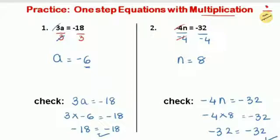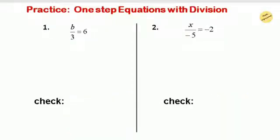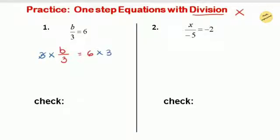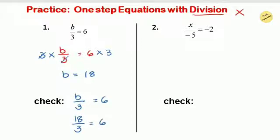We use the division property for multiplication equations. The next type is division equations, where the inverse operation is multiplication. First question: b over 3 equals 6. We multiply both sides by 3; on the left, 3 divided by 3 gives 1, leaving b, and on the right, 6 times 3 equals 18. To check: write the equation and substitute b with 18 — 18 divided by 3 equals 6. Both sides equal 6, so b equals 18 is correct.